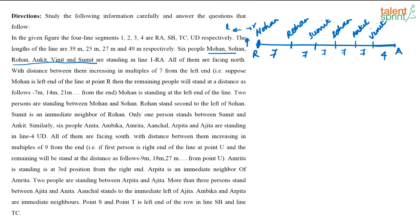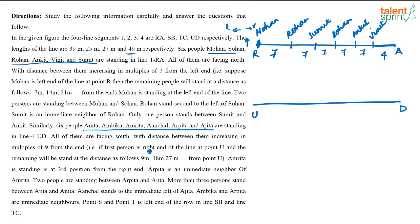Now we consider line 4, UD. The length of line UD is 49 meters. In this line there are six people: Anita, Ambika, Amrita, Anchal, Arpita, and Ajita standing in line 4 UD. All of them are facing south, and the distance between them increases in multiples of 9 from the end. The first person is at the right end of the line at point U. So the first person is at U, and the second person is 9 meters away, placing 6 persons consecutively at multiples of 9.